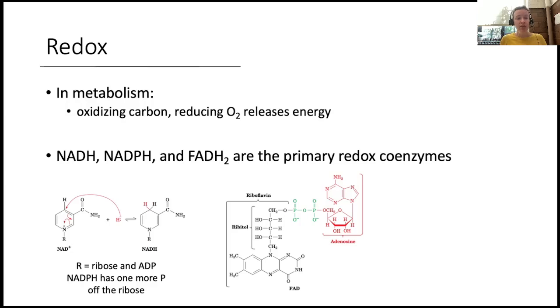So these redox molecules, to remember some of the vocabulary we learned, are often considered coenzymes. The other word for them is cofactors. They are used in metabolism for oxidizing carbons, for reducing oxygen, and for releasing energy. And the primary ones we're going to see, although there are others, are NADH, NADPH, and FADH2.